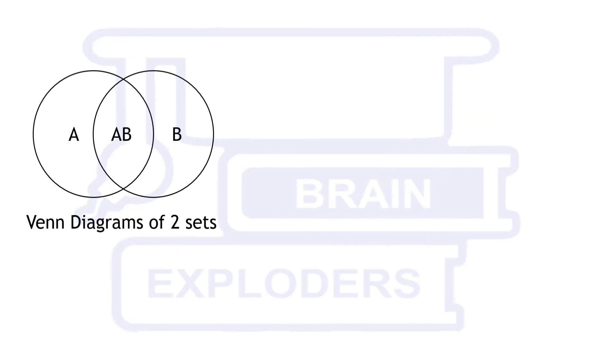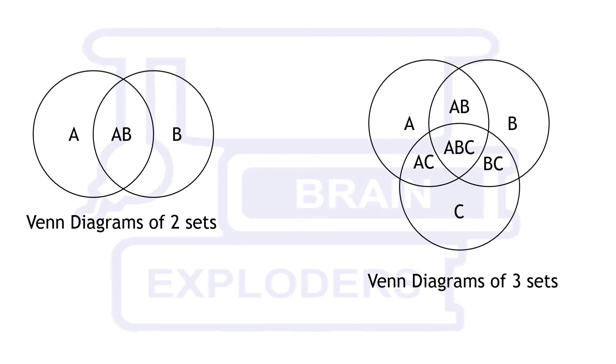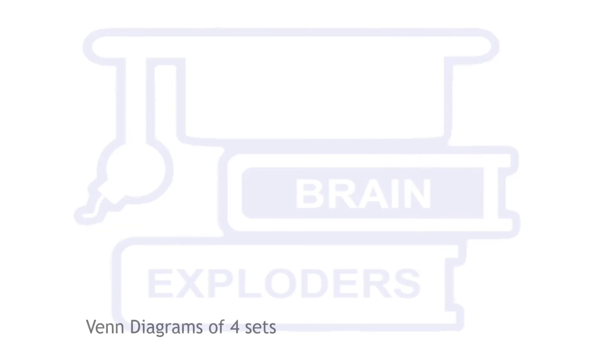If we have to convert an Euler diagram into a Venn diagram, then we have to draw the Venn diagram of the given number of sets. It is easy to draw the Venn diagrams of 2 and 3 sets, but as we increase the number of sets, difficulty increases exponentially.